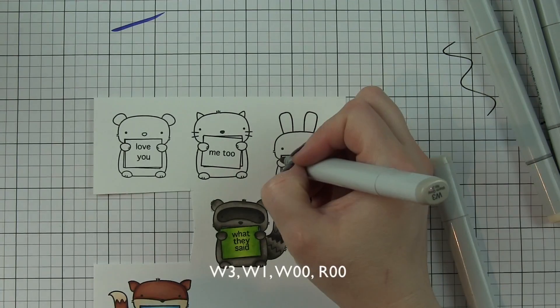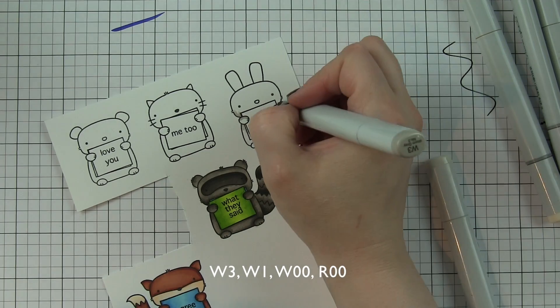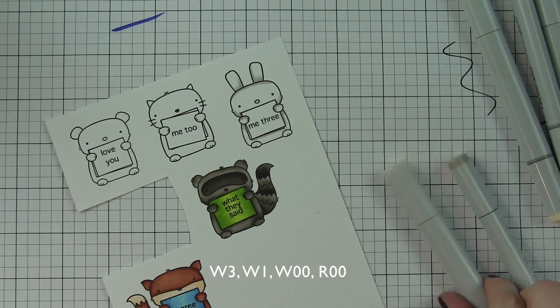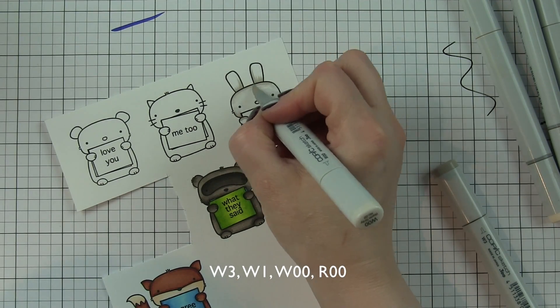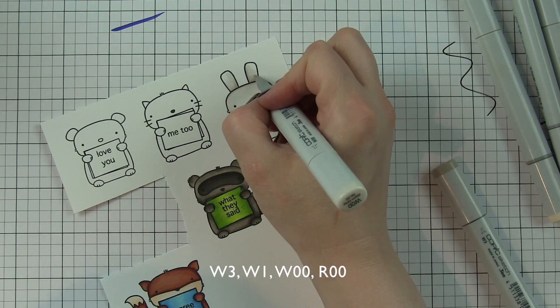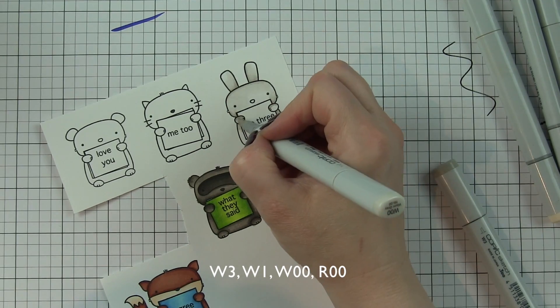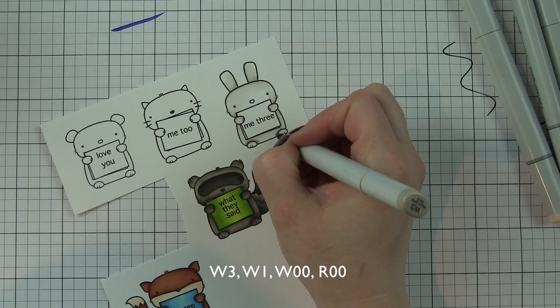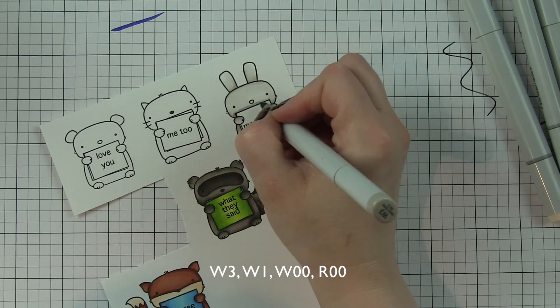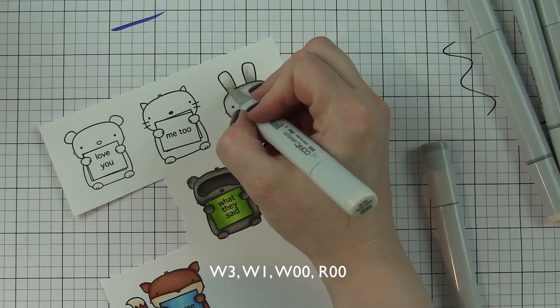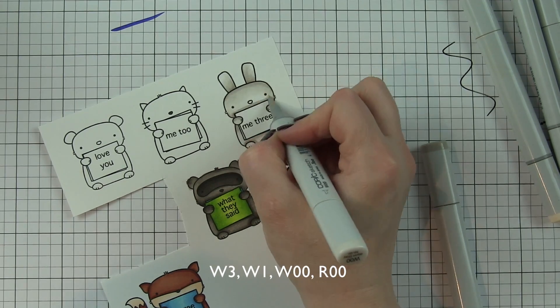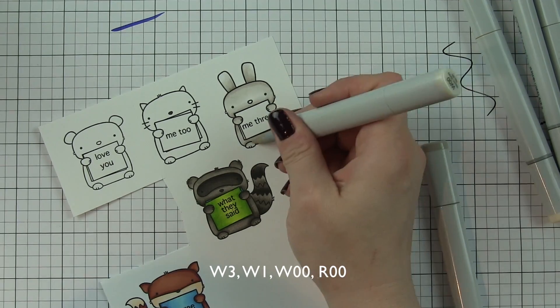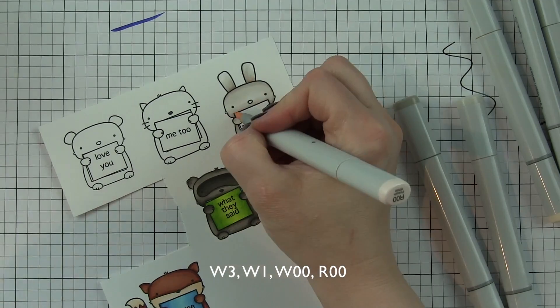The bunny is also going to be in some shades of warm gray but much lighter shades than the raccoon - warm gray three and warm gray zero, even a little warm gray one, and then R000 is the pink that I'll use for the cheeks and the nose. I want the bunny to appear almost white but still have some nice shading and texture so it will blend in nicely with the others.